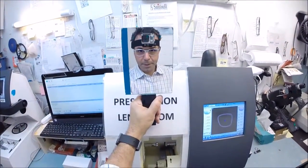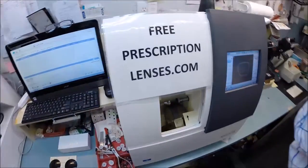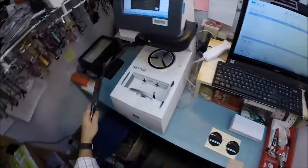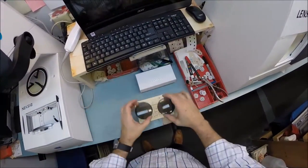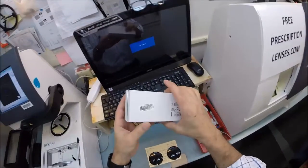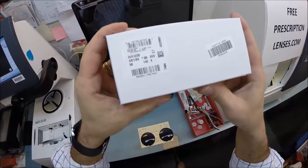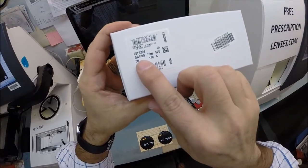Hey Sharon in Burlington, Matthew here with freeprescriptionlenses.com. With the help of my GoPro camera, I'm going to show you how I cut prescription polarized lenses for your Versace, model number 4228 in color GB1, which is the classic black and gold in the 56 eye size.